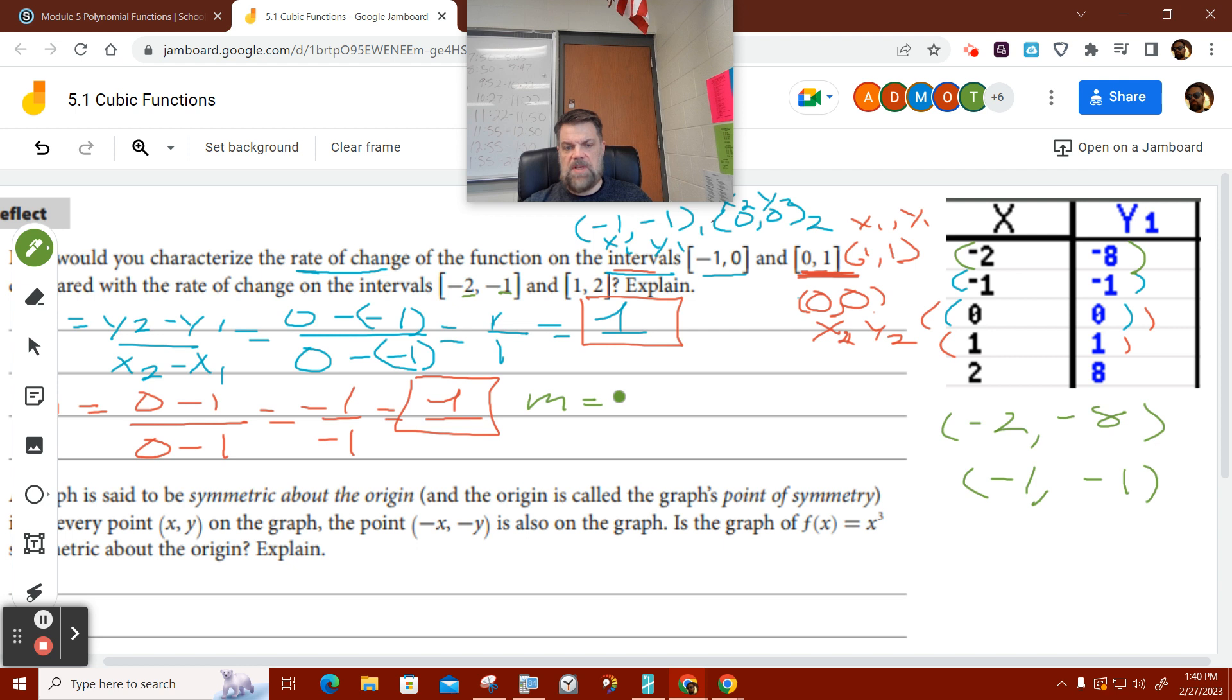So if I find the slope for that, that's just going to be negative 8 minus minus 1 all over negative 2 minus minus 1. When you minus a minus, it's the same as a plus. And so I get 7 over 1 or 7, right?